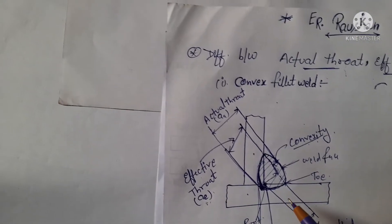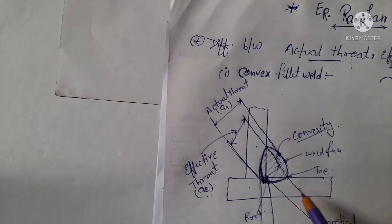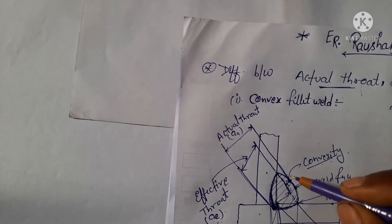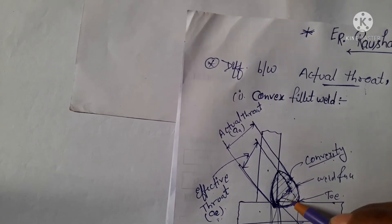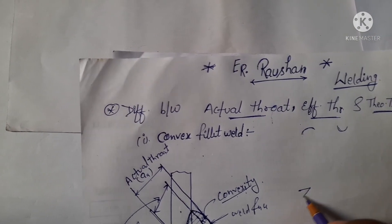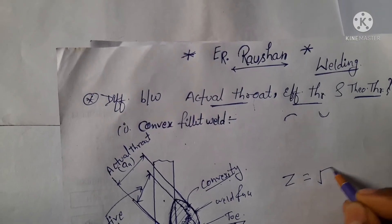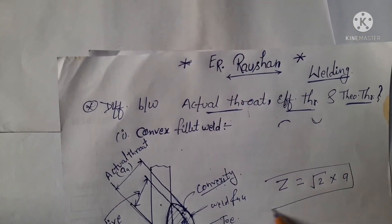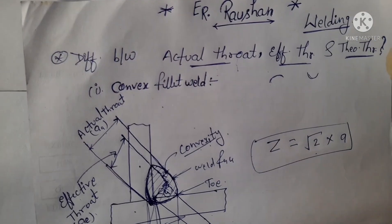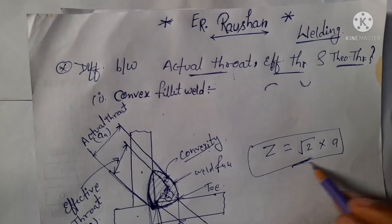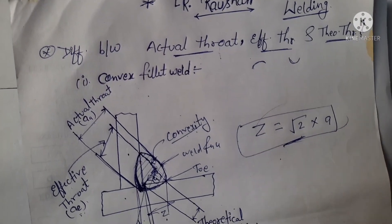One more thing: this distance is known as leg length, and this distance is known as throat, that is A. The relation between them is: leg length Z equals root 2 multiplied by throat thickness A. This is a derived formula, and we have also derived this. You can see my videos for how it is derived. Thank you.